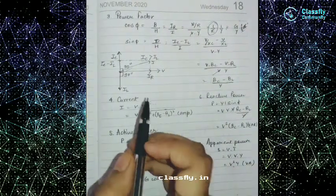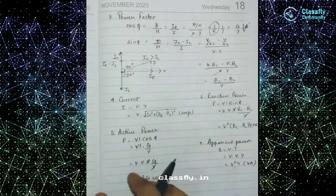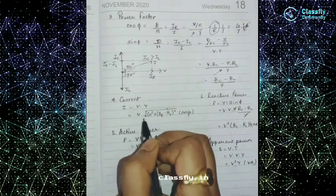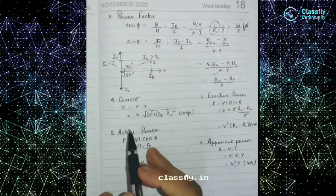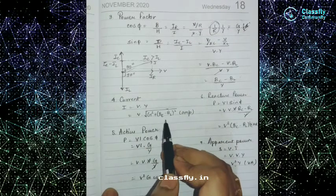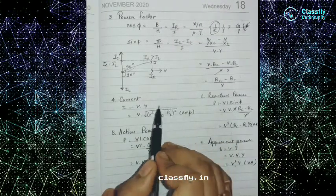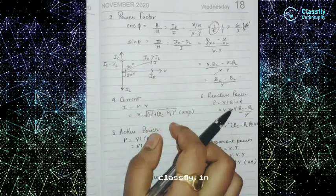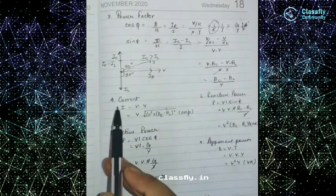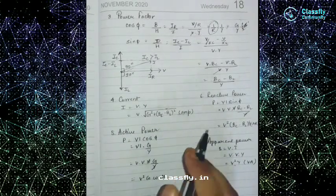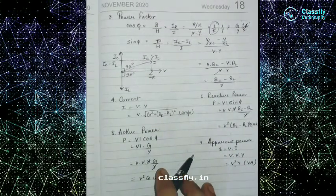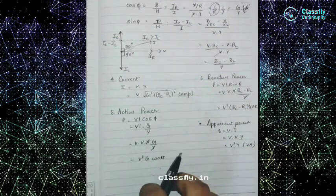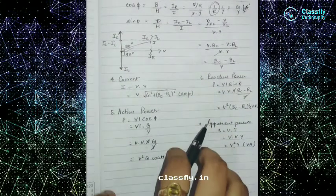The current I equals voltage times admittance, so I = V · √(G² + (BC - BL)²), using the admittance value already derived. The SI unit of current is ampere.